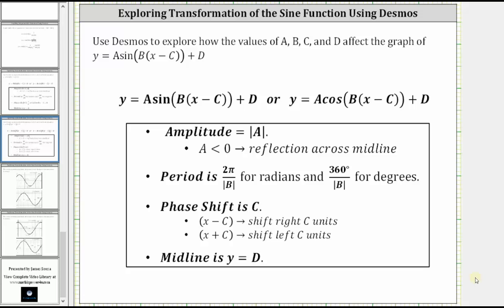The absolute value of a is equal to the amplitude. And if a is less than zero, or negative, the graph is reflected across the midline.